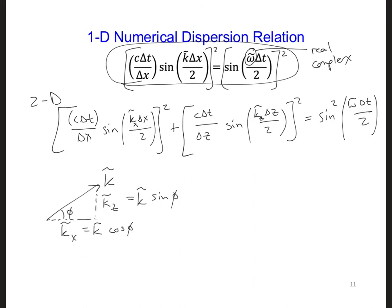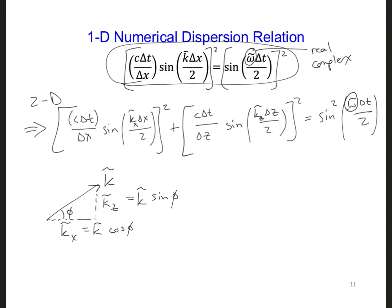If we then move the terms in this equation around in order to solve for this one, just as we did in one dimension, then we get the two-dimensional numerical dispersion relation that's shown here. This two-dimensional numerical dispersion relation is definitely not the same as the analytical dispersion relation we got earlier, which is plus or minus c times k.